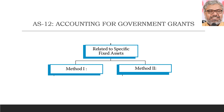The most important aspect of AS12 relates to government grants for specific fixed assets — where the government gives a grant to an organization in order to acquire a specific fixed asset, which is a depreciable asset. AS12 gives the option to enterprises of two possible methods. Not both — one of them. They can choose which method to follow when they receive a government grant related to a specific fixed asset.